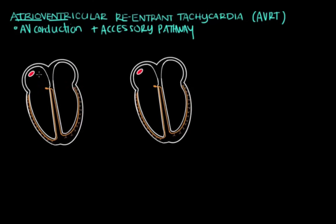Normally, signal goes from the SA node through the atrium to the AV node. The AV node is sort of like the gatekeeper, or the bridge, that bridges signal from the atrium to the ventricle. In a normal heart, signal has to go through this AV node, and it goes down to the ventricles and causes ventricular stimulation and contraction.